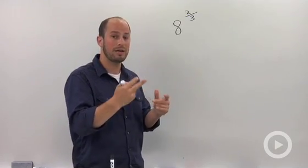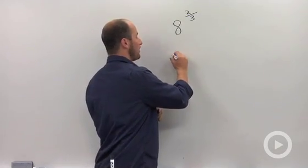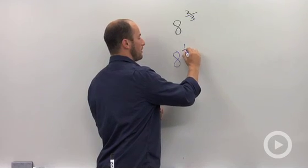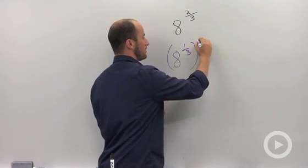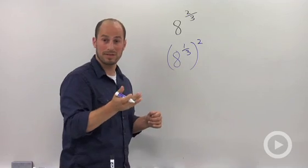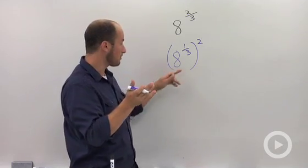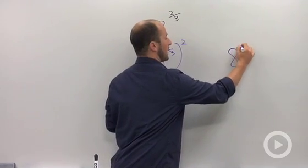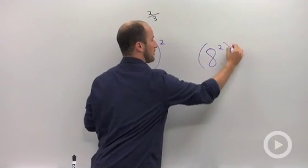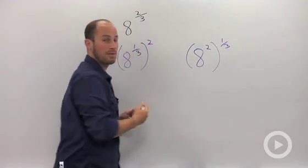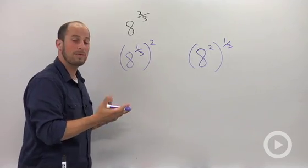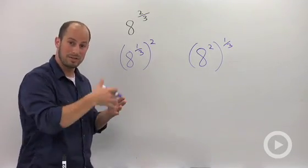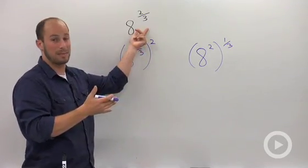There's two ways of doing that. We could do our root first. Remember, when we take exponents to exponents we multiply, so this ends up being the same thing. Or we could do the exponent first and then the root. Either way this works—when we distribute this through, we would end up with the same statement.